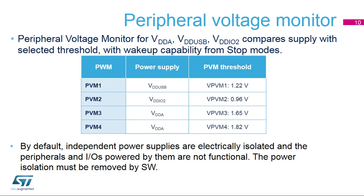The STM32L4 MCU embeds four peripheral voltage monitors to detect if the independent supply is present or not. These comparators have wake-up-from-stop mode capability. PVM1 compares the VDD-USB voltage with the 1.22 volt threshold. PVM2 compares the VDD-IO2 voltage with the 0.96 volt threshold. PVM3 compares the VDD-A voltage with the 1.65 volt threshold, intended for the comparators and analog-to-digital converters. To guarantee any of the supply sequences on the application, power isolation has been implemented and is active by default.